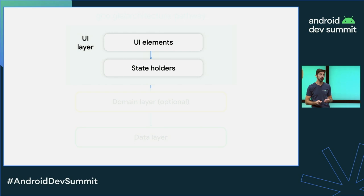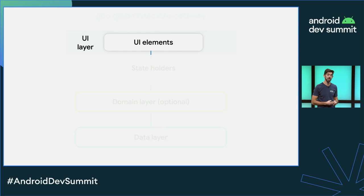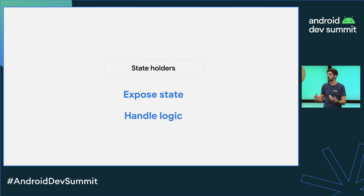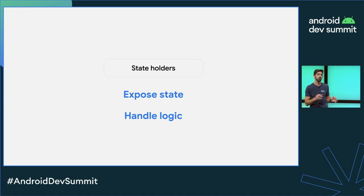The UI layer is made up of two entities. We have the UI elements that actually render the information on the screen, and we have state holders. State holders are going to hold and expose state to the UI and handle its potential logic. Depending on the types of state and logic, the implementation detail of these state holders might be different — and that's what we are going to cover today.